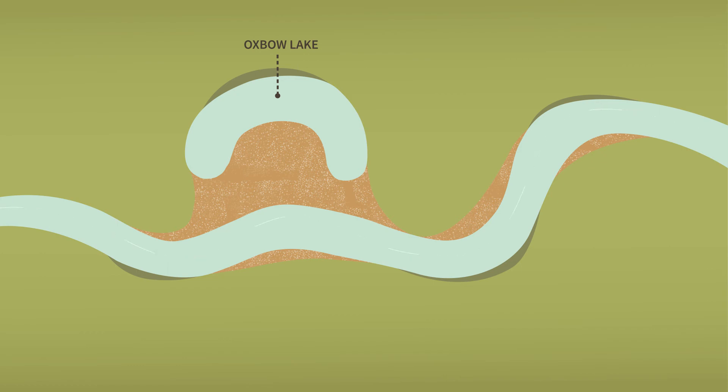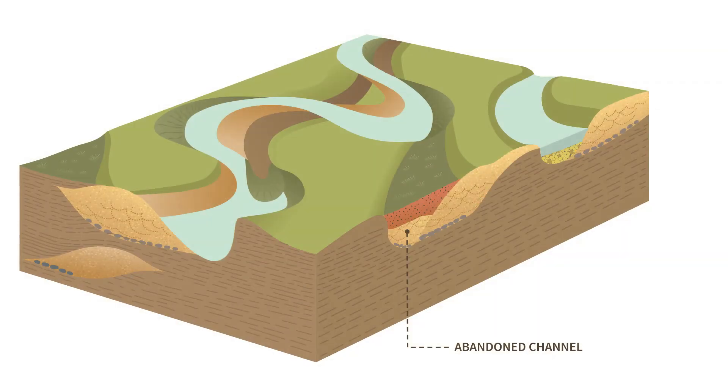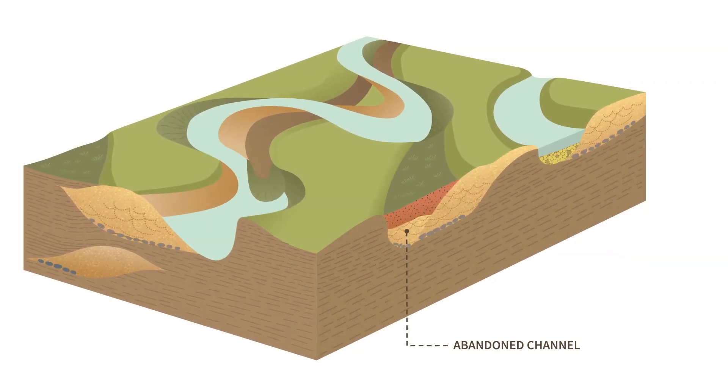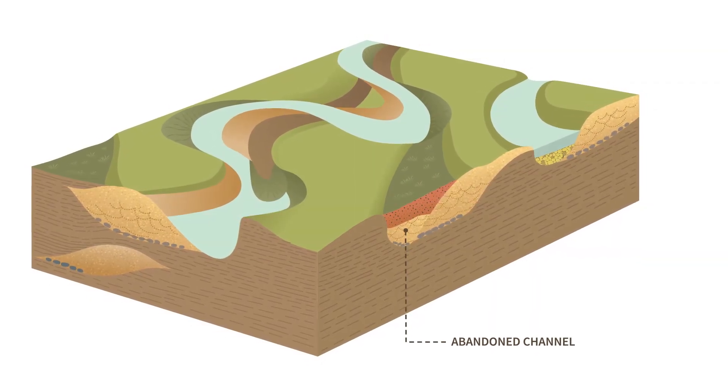The flood can also result in the water overflowing the sides of the river. As the water flows out and away from the river, it rapidly loses energy and ultimately dries away.